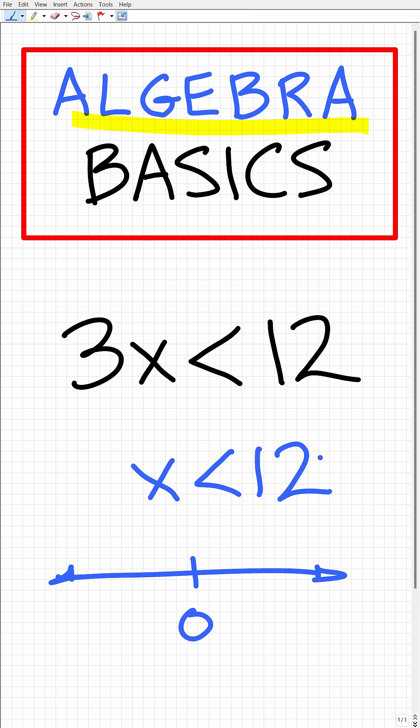So what you want to do is just make a simple number line. Put 0 right here, and then we'll go to this number 12 on the number line and put an open circle. Alright, now x is less than 12. Now where are the numbers that are less than 12? Well, it's to the left of this 12 right here.